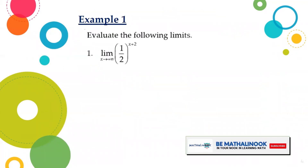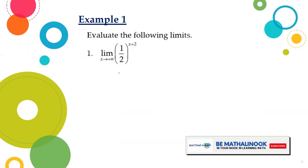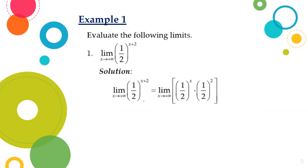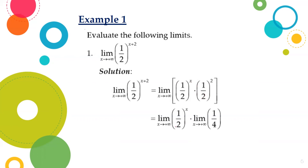Let us apply these theorems in evaluating some limits. For the first example: limit of (1/2)^(x+2) as x approaches positive infinity. Using laws of exponents, (1/2)^(x+2) can be expressed as (1/2)^x times (1/2)^2. Using the limit theorems discussed, since this is multiplication, it can be written as the product of two limits.